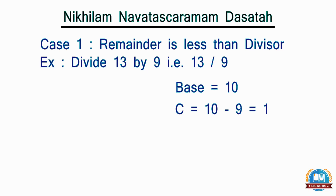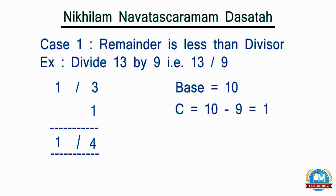Since the complement is 1, we need not be worried about it. Let's split the number into 2 parts. The left-hand side is for the quotient and the right-hand part is for the remainder, separated by a slash. Since the base is 10, put the slash after 1 digit from the right. Put the first digit of the dividend as it is under the horizontal line, then put the same digit under the second number of the dividend and add. This gives the quotient as 1 and remainder as 4.